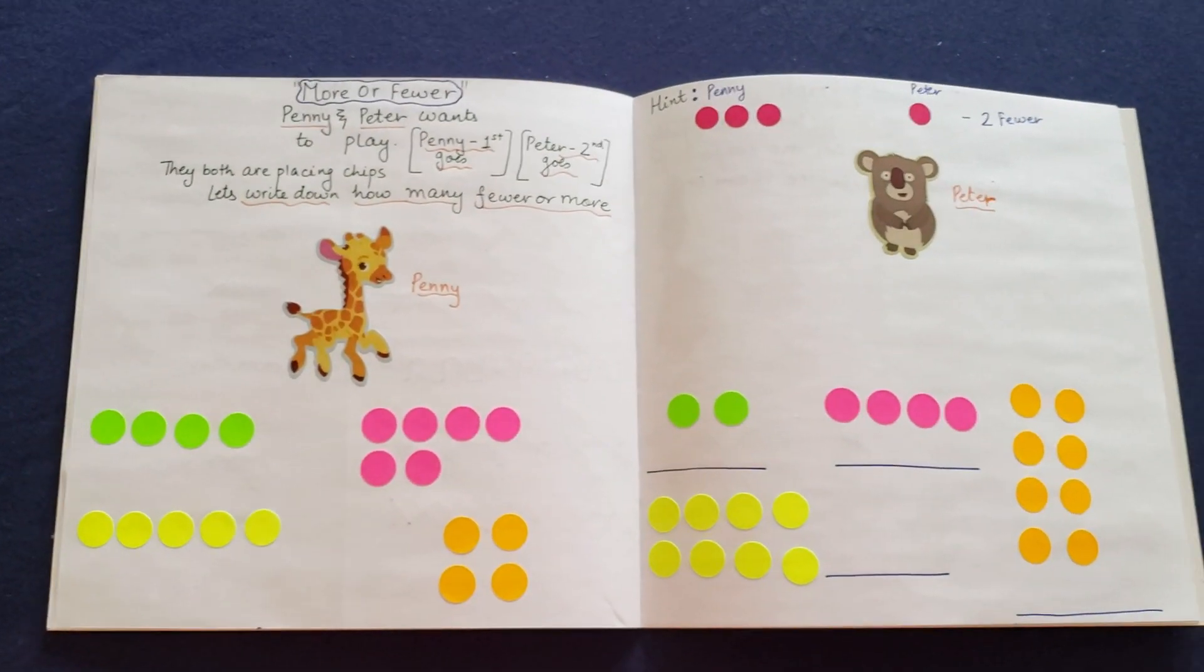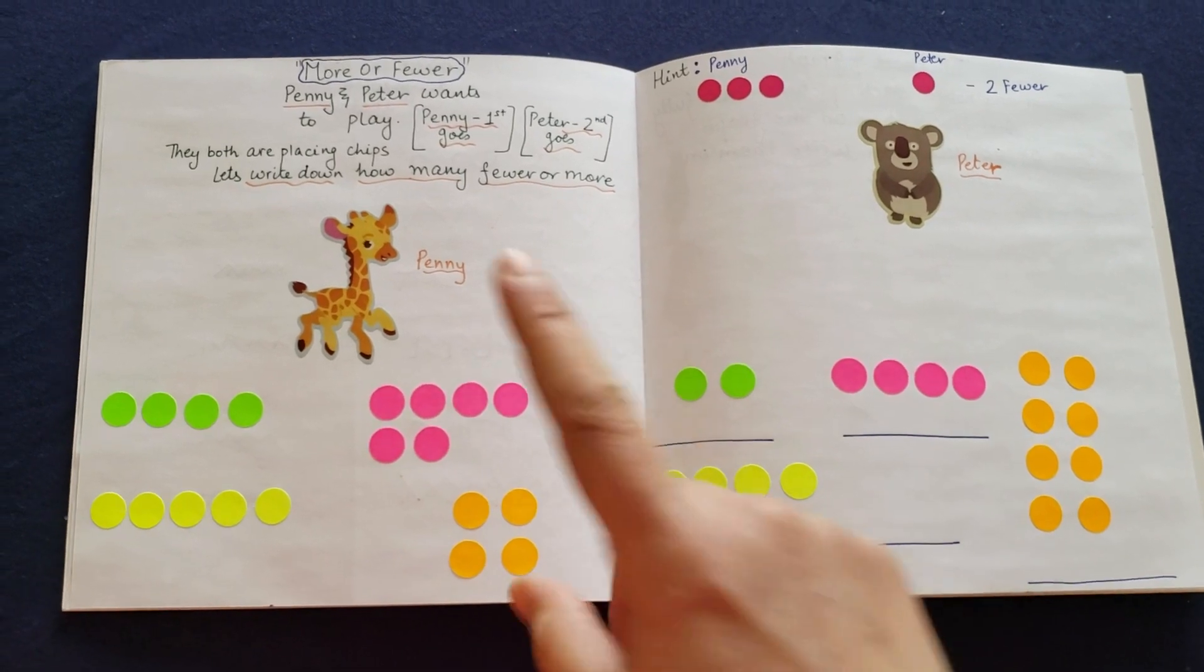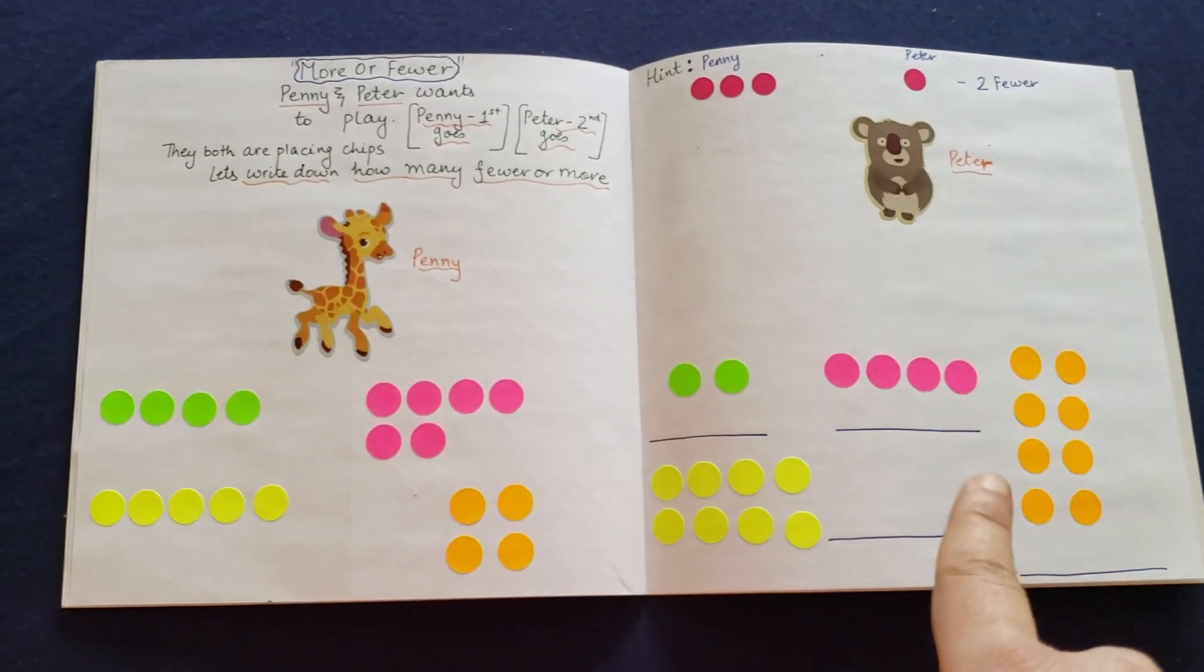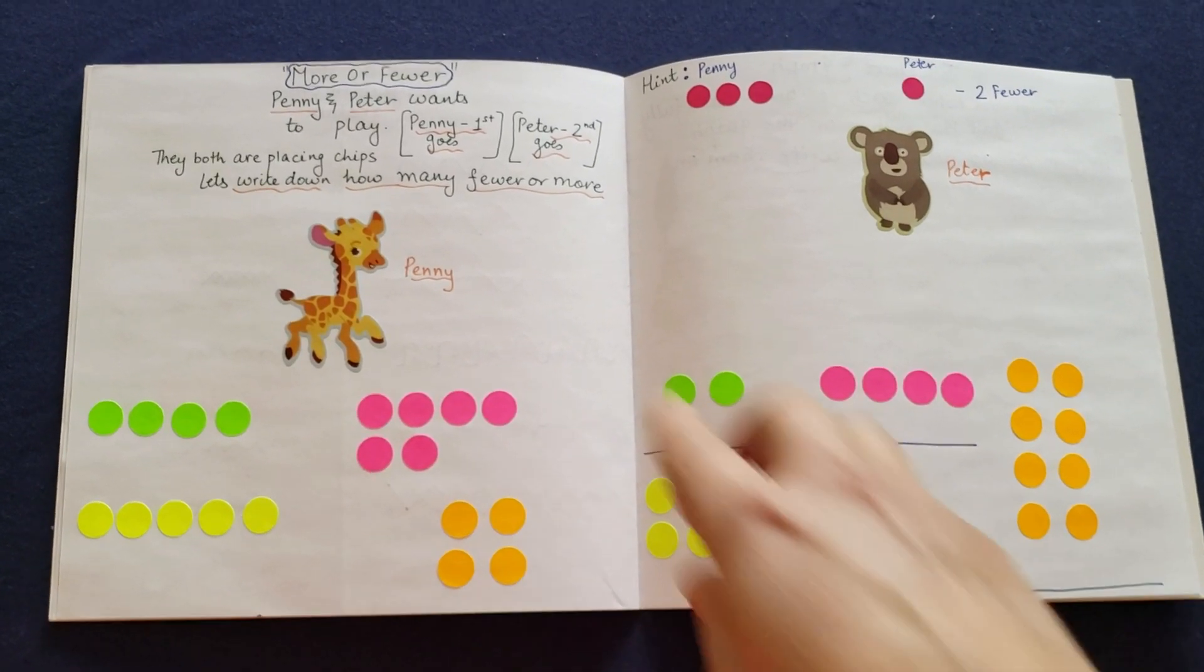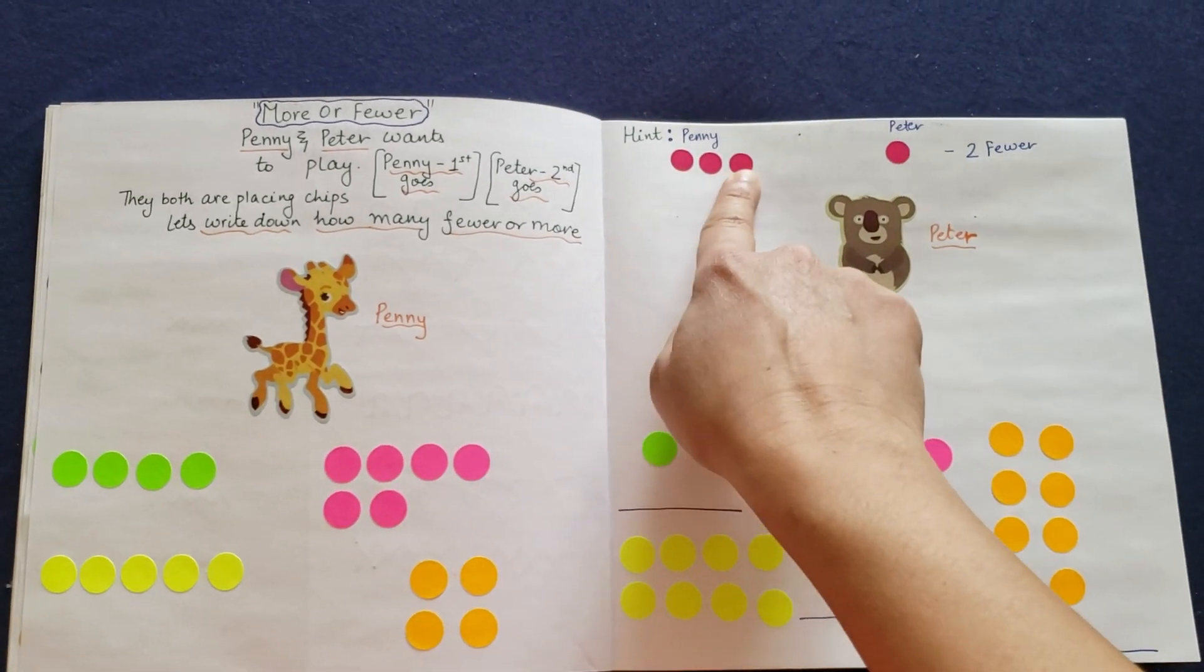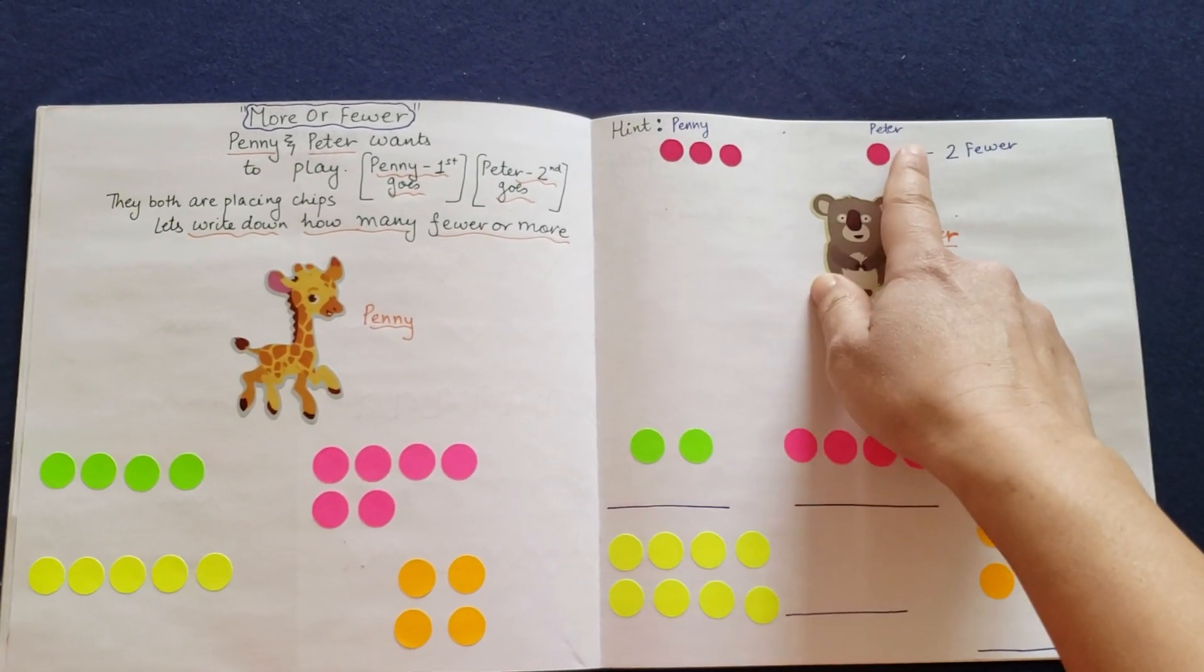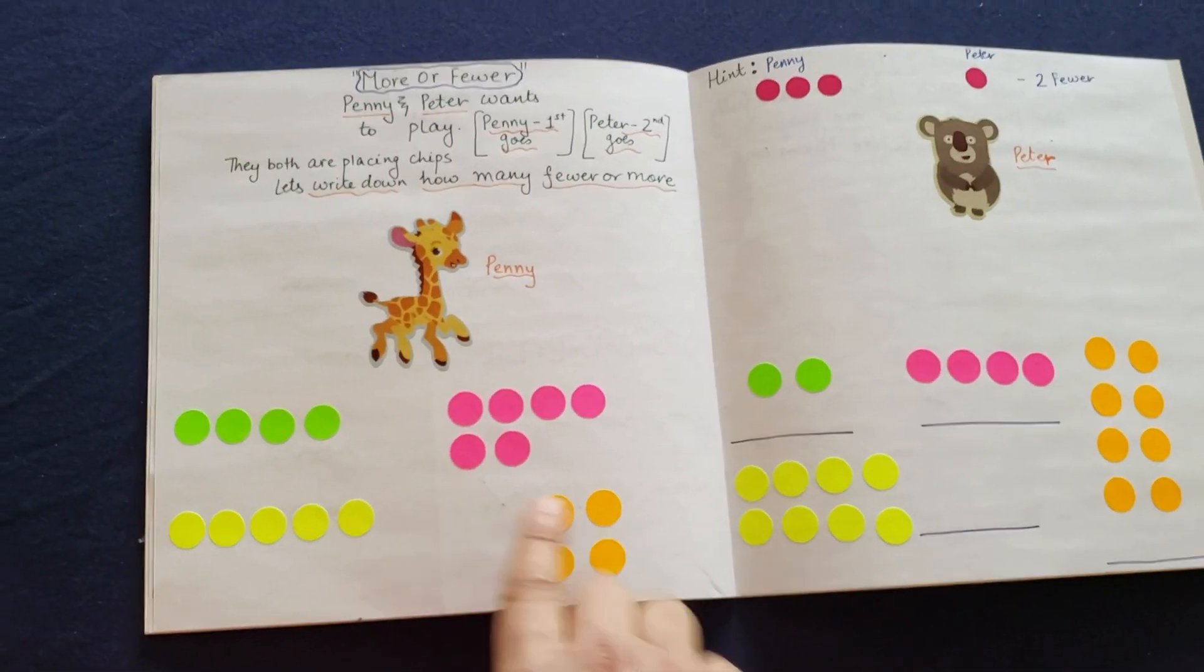Okay, this is super cute. More or fewer. Penny and Peter wants to play. Penny goes first. Peter goes second. They both are pasting chips. Let's write down how many fewer or more. Okay, I gave a hint. Penny had pasted three chips. Peter had put one. So two fewer. So that's what she needs to do.